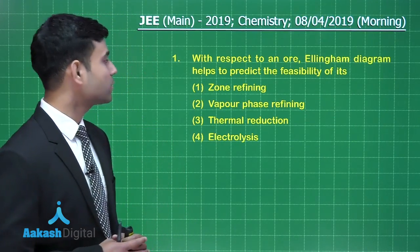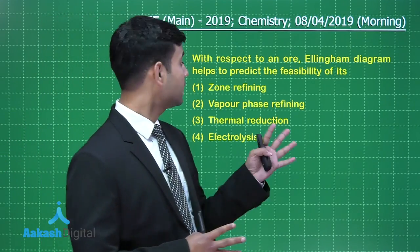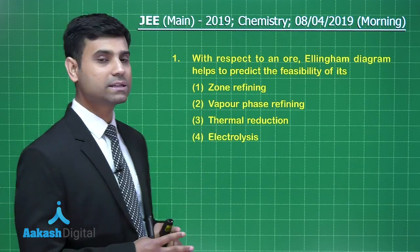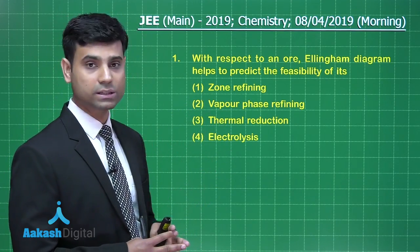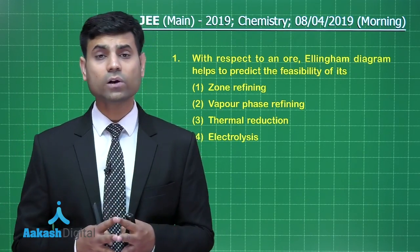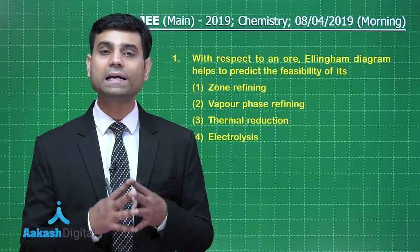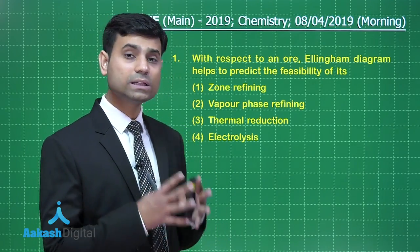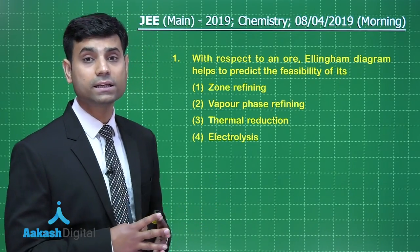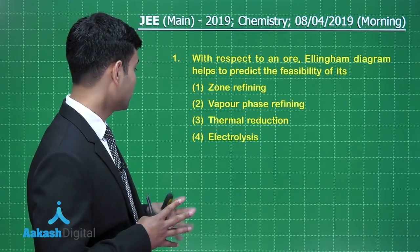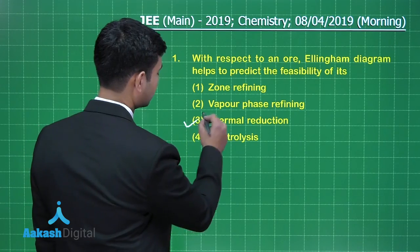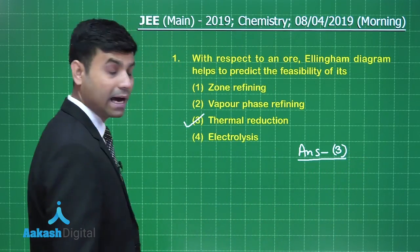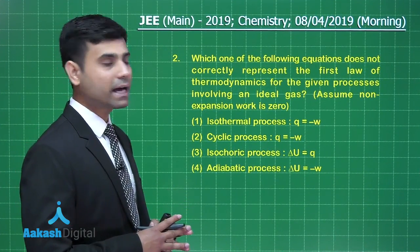The first question says: with respect to an ore, an Ellingham diagram helps to predict the feasibility of which process? The options are: zone refining, vapor phase refining, thermal reduction, and electrolysis. An Ellingham diagram is a plot of delta G versus temperature for the conversion of metal into oxide, and it helps us in understanding the thermal reduction processes of metal oxides. So the correct answer for this question is option 3.